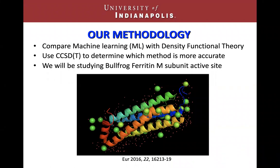So what's our methodology? We're going to use machine learning — notably the ANI platform, which is a prefabricated neural network — and we're going to use it alongside density functional theory. In the past, these have been similar accuracy methods, but machine learning is a lot faster. We're also going to use coupled cluster, or CCSD(T), to determine which method is more accurate. Coupled cluster is a significantly higher accuracy method, but it takes way too long, which is why it's often not used in place of these other methods. For our study, we're going to be studying the bullfrog ferritin M subunit active site.